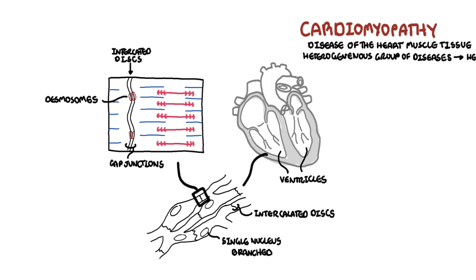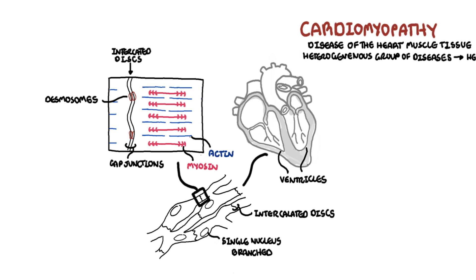The desmosomes hold the fibers together when the heart contracts. The actual contractile units of the cardiac muscles are the sarcomeres, which are made up of myosin and actin filaments. These two filaments slide past one another to cause a muscle contraction.